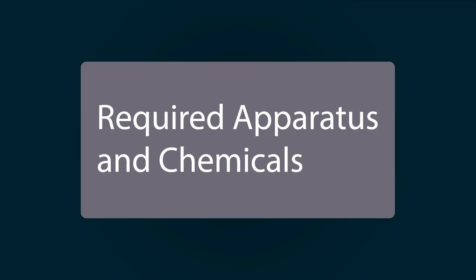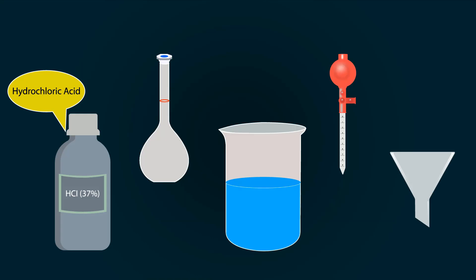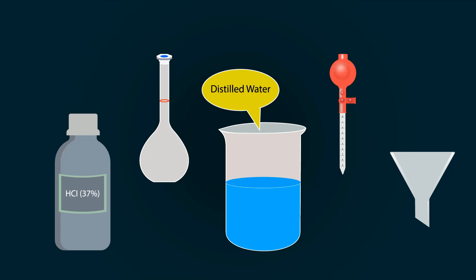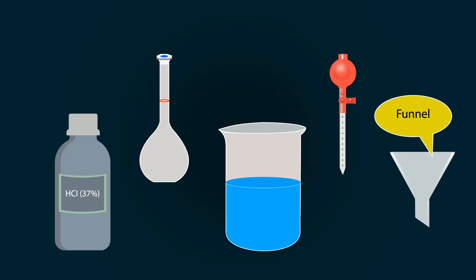Required apparatus and chemicals are: 37% HCL, measuring flask of 500 milliliters, distilled water in a beaker, a pipette, and a funnel.